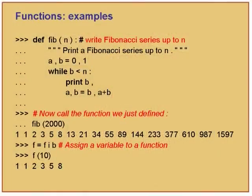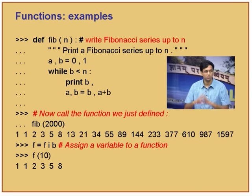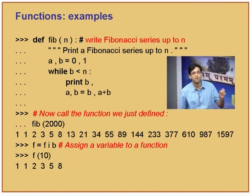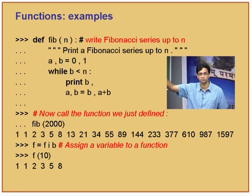Everything in a function is indented one level to the right. Once we get out of it, we are back to the level of 'def', which indicates you are out of the function and have finished defining it. At the instant when you type the function in Python and finish the function scope, a function object is created.